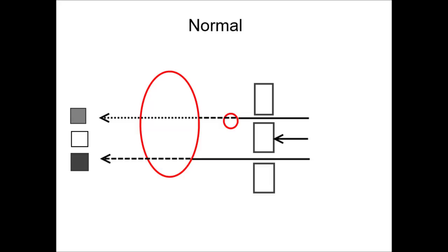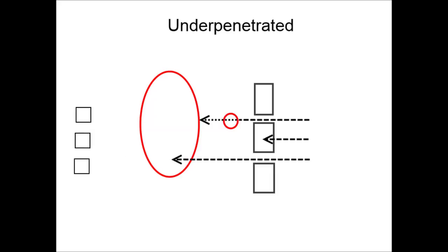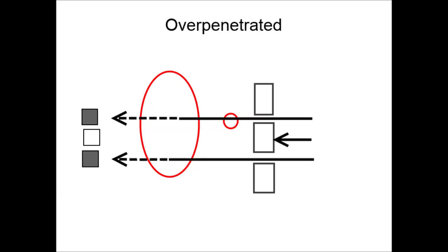This diagram shows how the x-rays travel through these structures — with the heart on the left, a pulmonary vessel in the middle, and the spine on the right. In an underpenetrated film, the weak x-rays fail to penetrate even the soft tissue of the heart, meaning the heart appears just as white as bone. In an overpenetrated film, the powerful x-rays go straight through the small, soft pulmonary vessels as if they weren't there, making them invisible, while the heart appears darker than it should.